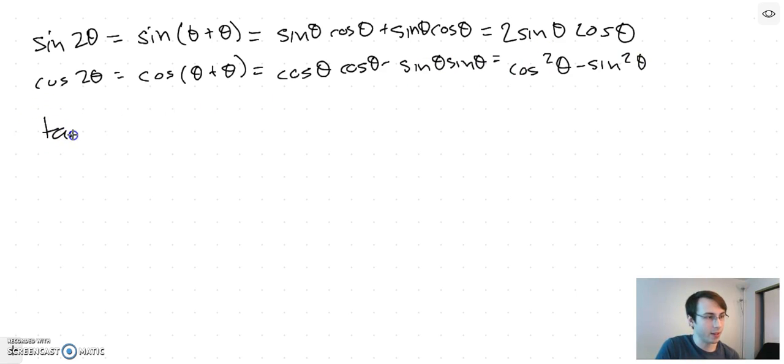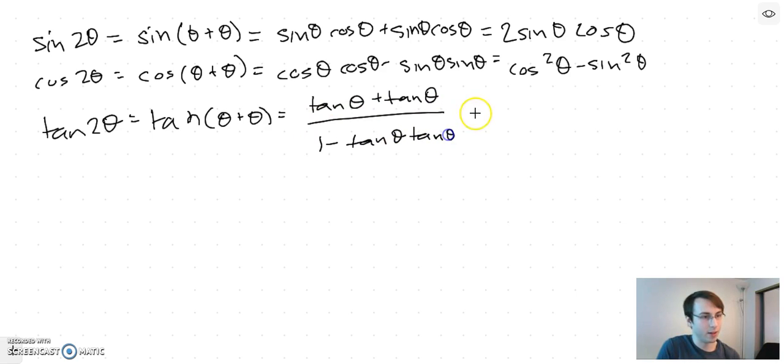And then tangent of 2θ using our angle addition formula. So that's tan θ plus tan θ over 1 minus tan θ tan θ, so that is 2 tan θ over 1 minus tan² θ.